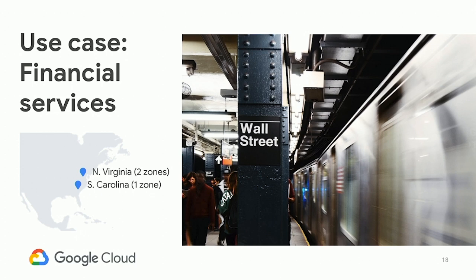Another example is financial services, and this gets to the disaster recovery situation. You could set up a couple of zones as your primary high availability service close to Wall Street — good enough for back office operations, still very fast and high throughput. Then we've got a South Carolina zone about 400 miles to the south. If North Virginia goes down due to a hurricane or whatever, we will automatically fail over to South Carolina, or you can have a manual failover. Your recovery point objective is going to be measured in minutes — most of your data will be there in just seconds — and your recovery time objective, if you're doing automatic failover, can be measured in seconds.